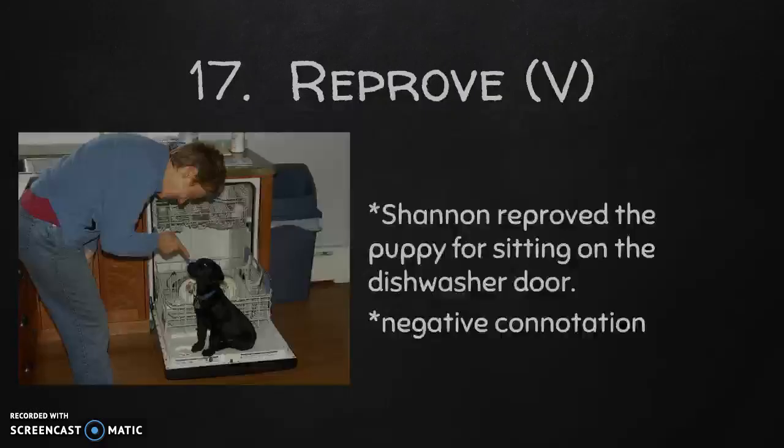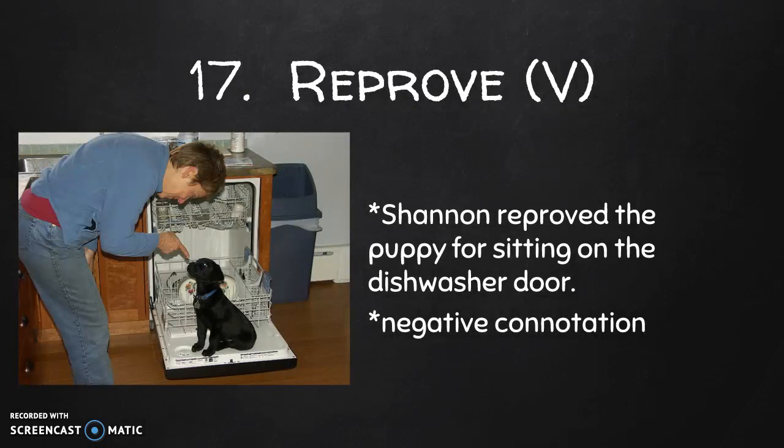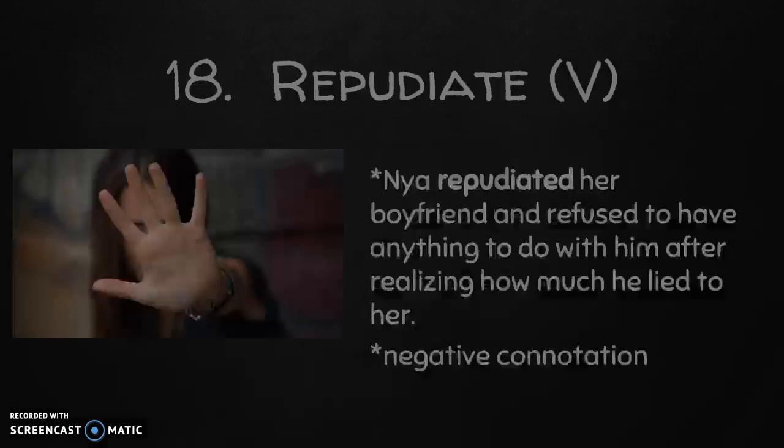Number seventeen is reprove, which is a verb. The definition for reprove is to find fault with, to scold, or to criticize. Just like in our picture, Shannon reproved the puppy for sitting on the dishwasher door — she is telling it that it is not doing something right, scolding it, criticizing it, and finding the reasons why it's wrong. This really has a negative connotation.